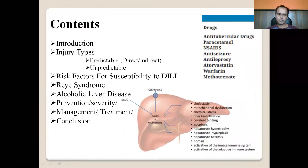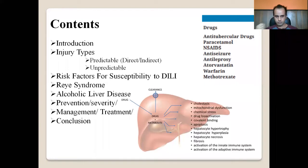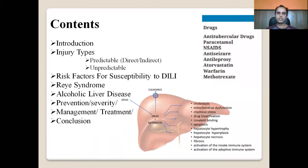Let us look at the contents we'll be covering today: introduction to hepatotoxicity, injury types — predictable when a chemical is directly hepatotoxic, and unpredictable when hepatotoxicity occurs through immune mechanisms. We'll also cover risk factors for susceptibility to DILI — drug-induced liver injury — followed by examples like Reye syndrome, alcoholic liver disease, prevention, severity, management, treatment, and conclusion.